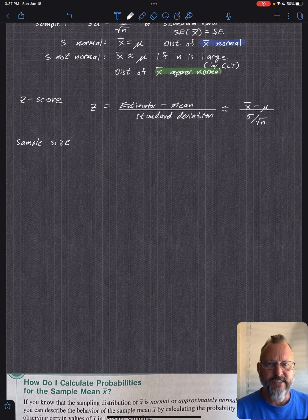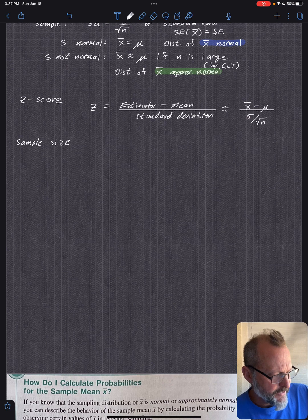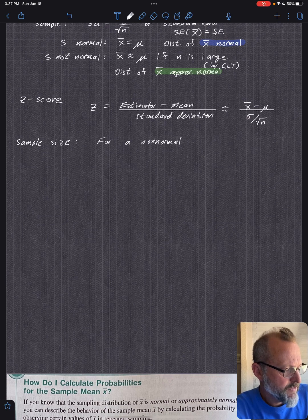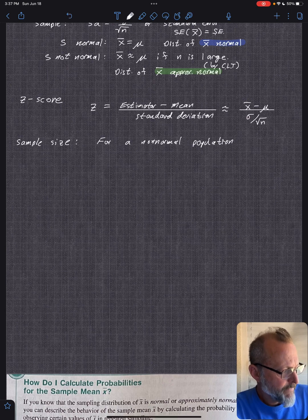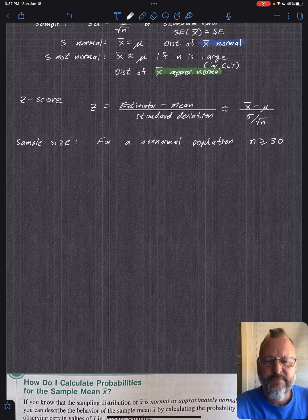Think about what I just said. Rewind it. And normally, the magic number is 30. So for a non-normal population, n is greater than or equal to 30. So you need to do 30 samples of it. And that number can be proven and all that.